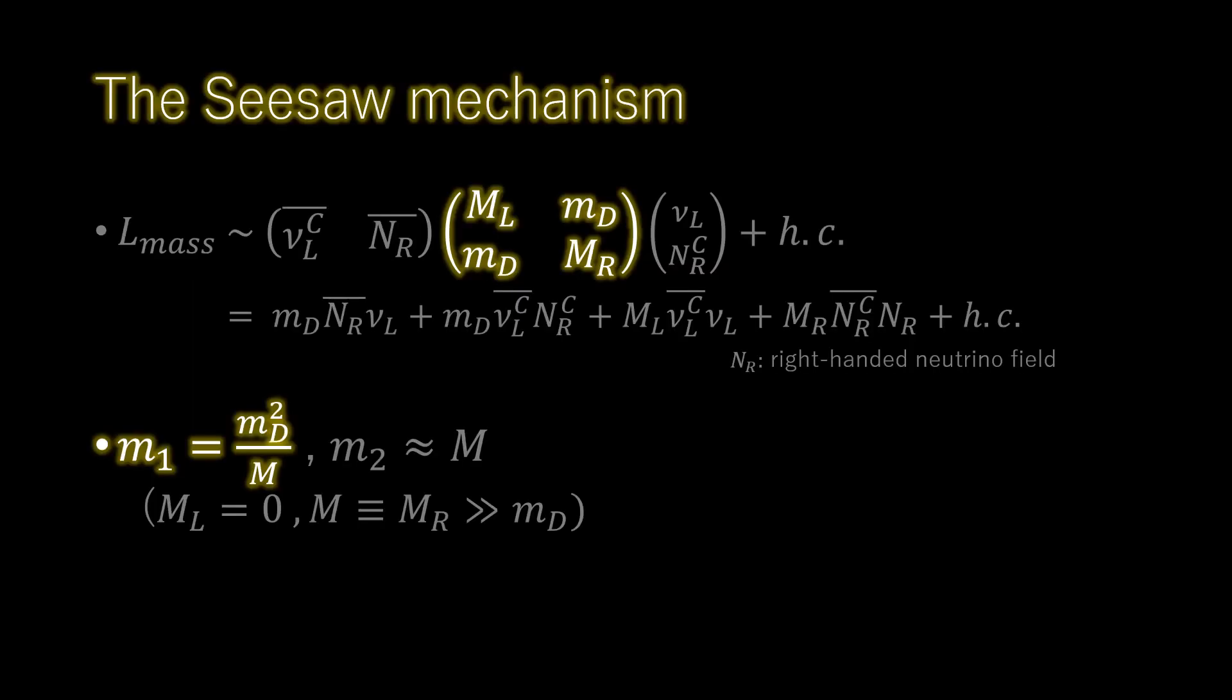Adding a right-handed neutrino in this way seems pointless, since we cannot see it directly, but such a particle does have observable effects. We can write down a term in the Lagrangian which generates a mass for the neutrinos, provided the Higgs boson acquires a vacuum expectation value. This mass term is the same as the mass terms of all the other quarks and leptons. It is called a Dirac mass term.